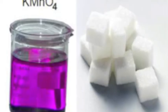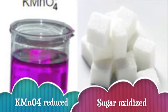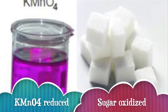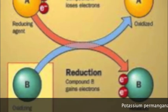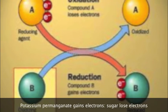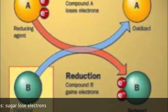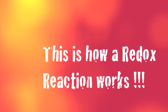Overall, the potassium permanganate is reduced and the sugar is oxidized. This means that the potassium permanganate gains electrons and the sugar loses some electrons.